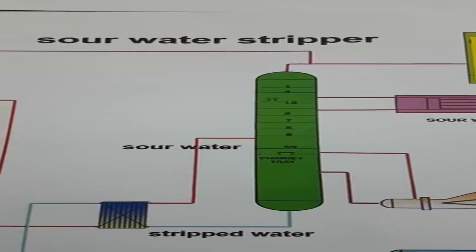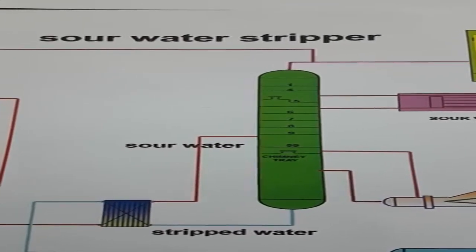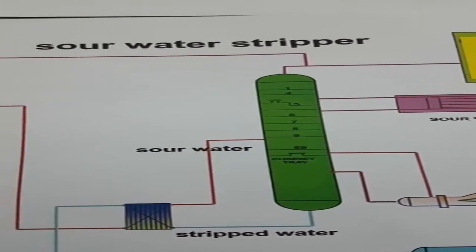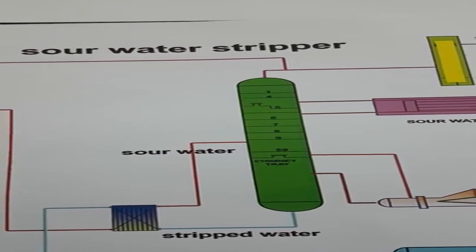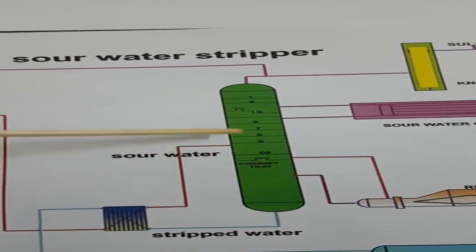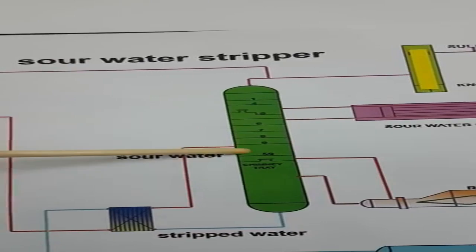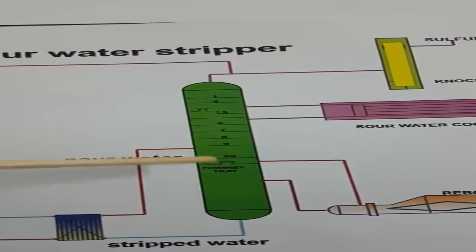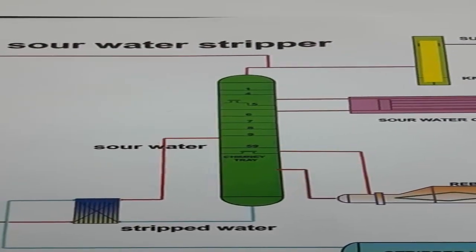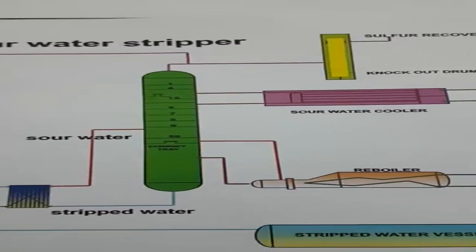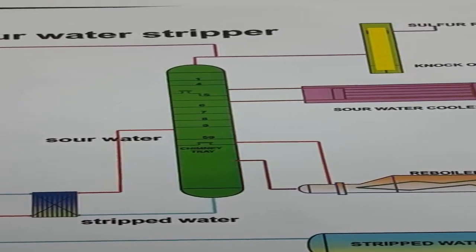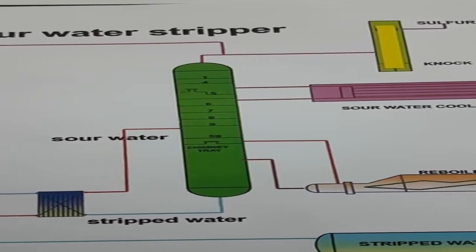Now let's discuss the principle behind removal of hydrogen sulfide gas in the sour water stripper. The main principle is that favorable conditions for stripping are low pressure and high temperature. We must maintain high temperature and low pressure in the stripper. At low pressure and high temperature, hydrogen sulfide gas is removed and goes to the sulfur recovery unit. That is why we heat the sour water with the reboiler, making it easier for hydrogen sulfide to be removed.